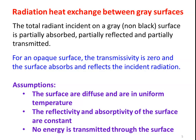Assumptions for the calculation: first, the surfaces are diffuse — they reflect energy in all directions uniformly, and are at uniform temperature. Second, reflectivity ρ and absorptivity α are constant for the entire surface. Third, no energy is transmitted through the surface, so transmissivity τ = 0.